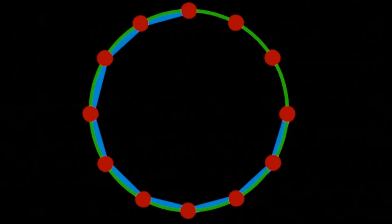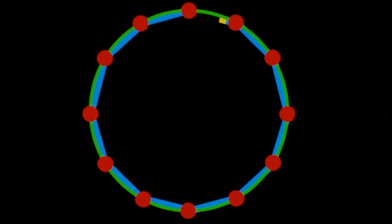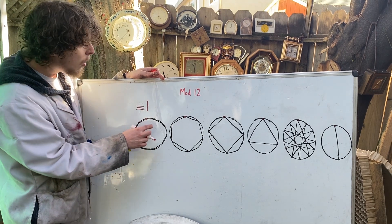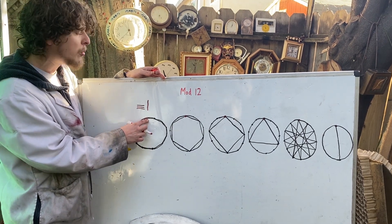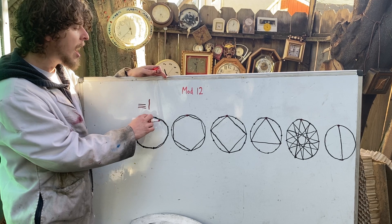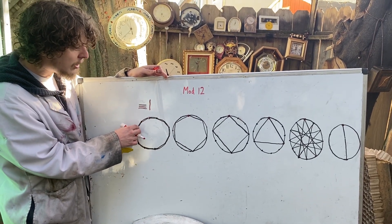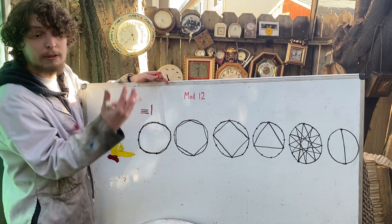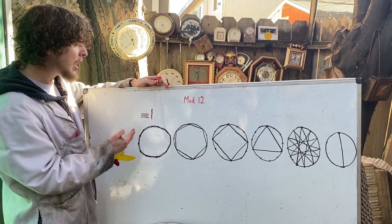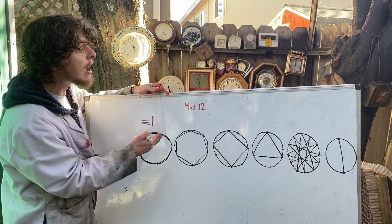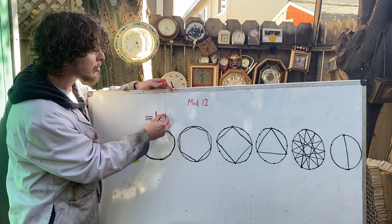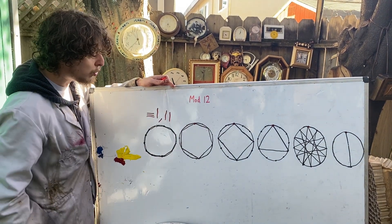We also get the same picture drawn in reverse if we add a number that's one less than a multiple of 12. For example, if this were noon on a clock and I ticked forward 11 hours, it would connect there, then there, then there, drawing this shape in reverse — the same with any number congruent to 11 in mod 12.